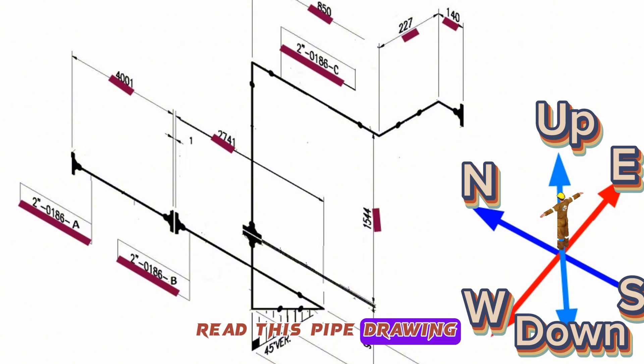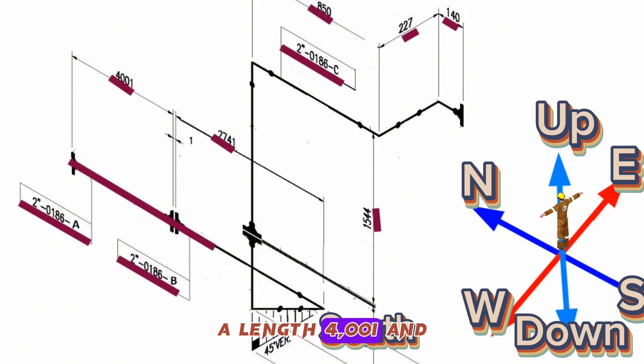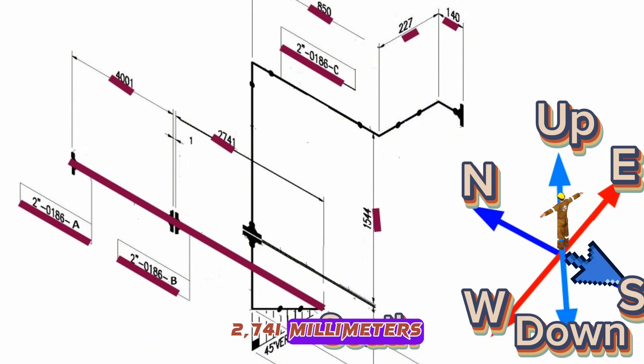We will start to read this pipe drawing from this point. The pipeline starts from this flange and extends southwards, a length 4001 and 2741 millimeters.